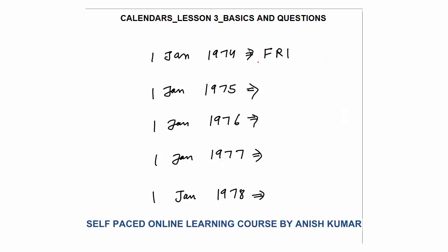Now I am going to explain a very important concept. 1st January 1974 is Friday. What will be the day on 1st January 1975? First count how many days are in between. 1974 is not a leap year, so total 365 days. After 1st January there are 364 days, plus one day of 1st January 1975 — total 365 days.